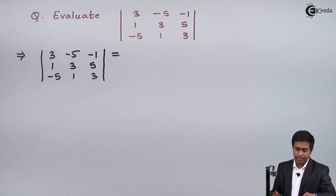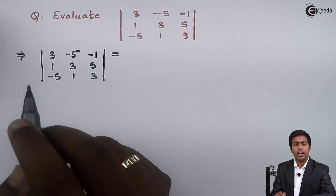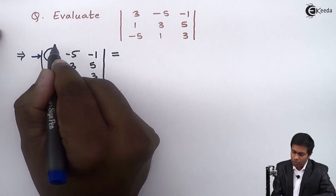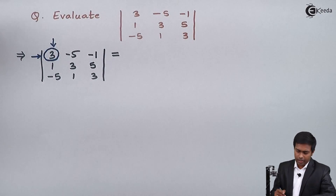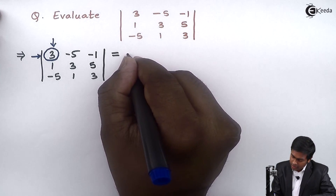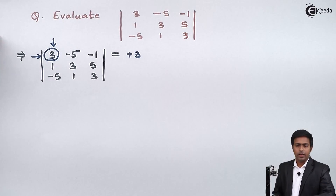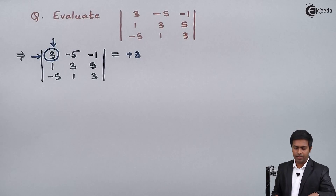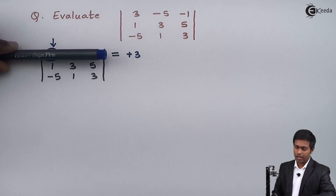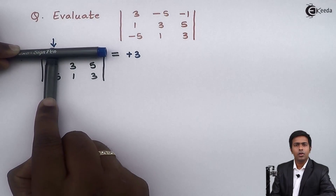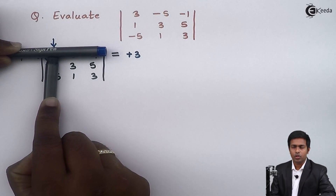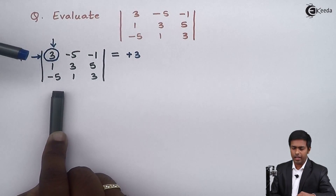To evaluate a determinant of 3 by 3 order, we always start with the element in the first row and first column. So 3 is that element — we write it down as plus 3. Since it is in the first row and first column, we hide the first row and first column. Now 4 elements are visible: 3, 5, 1, 3. We find the determinant of these 4 elements and multiply it with 3.